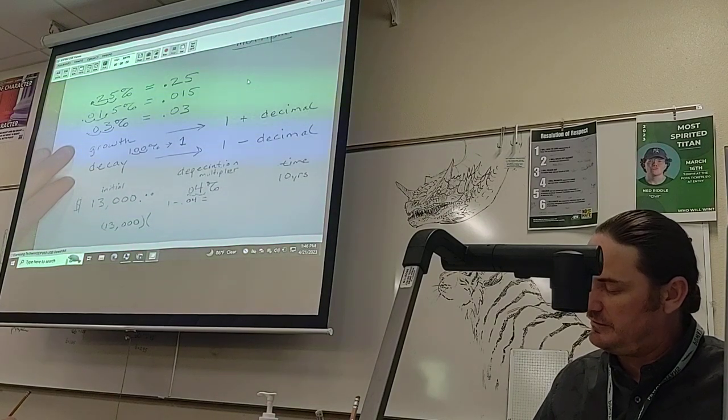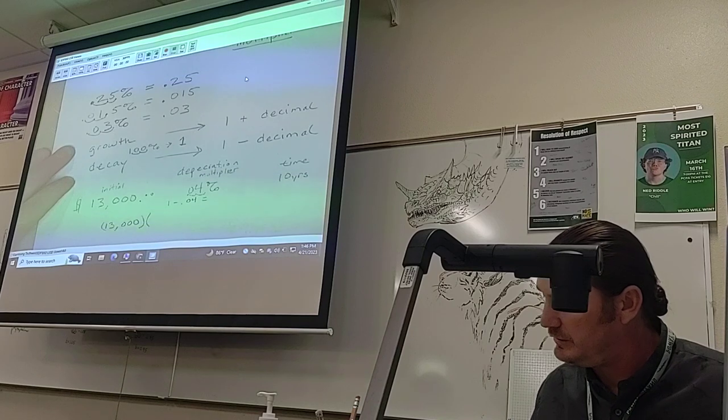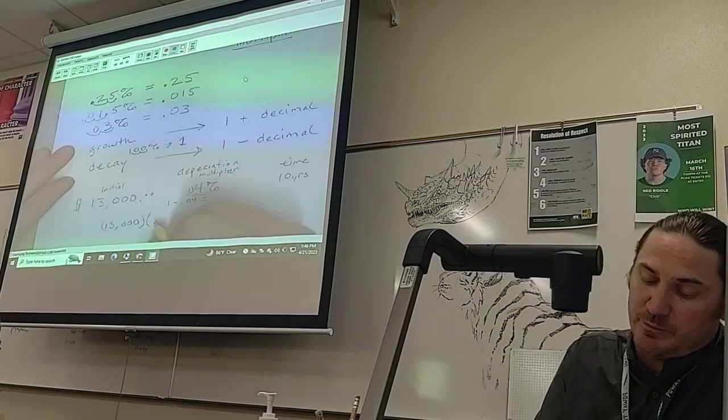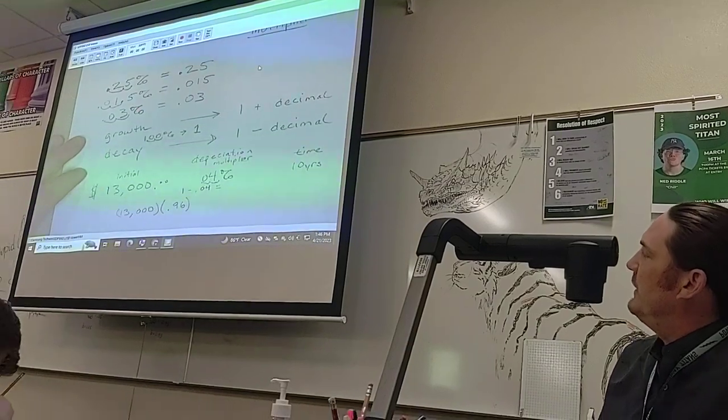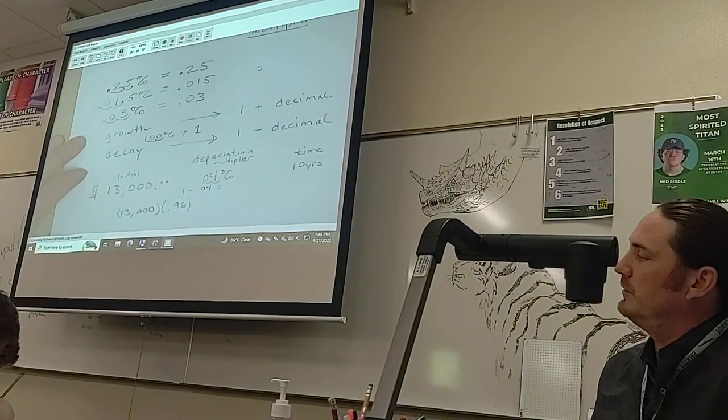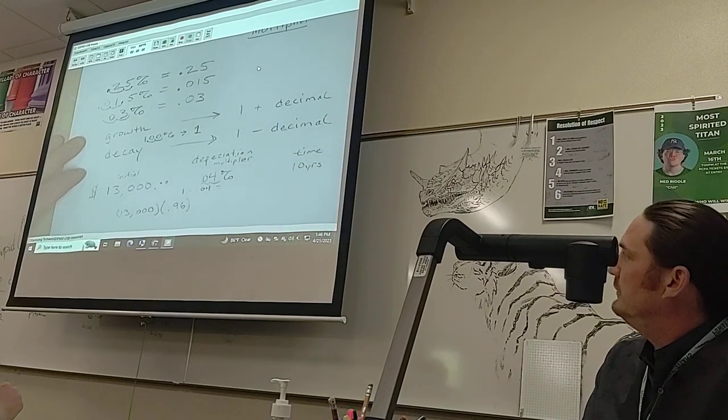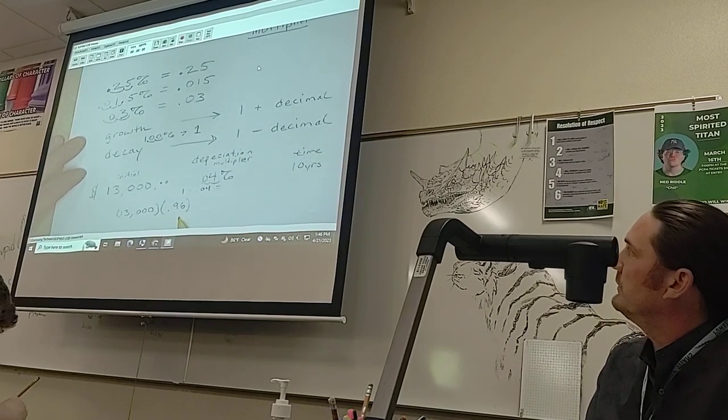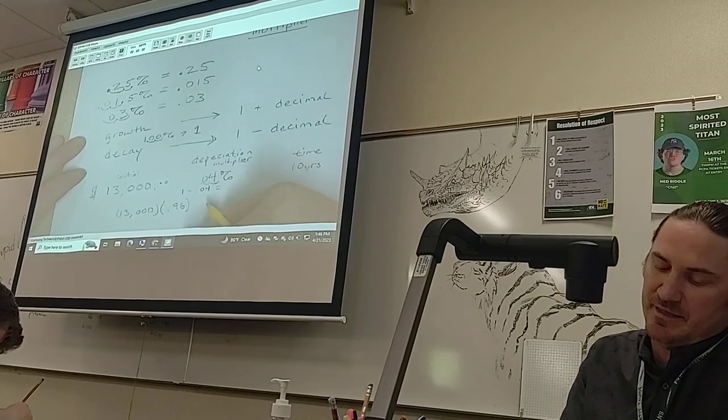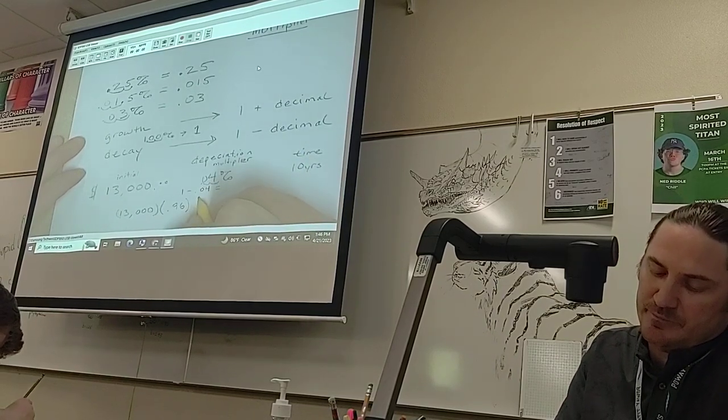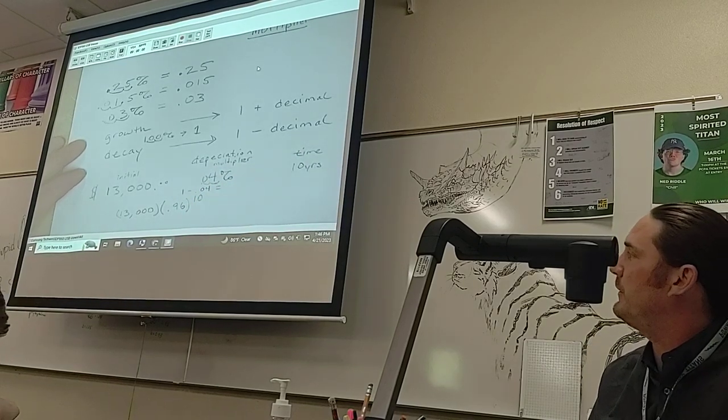We'll pull out our calculators: one minus 0.04 leaves us with 0.96. So that's our multiplier or our decay rate. Since it's less than one, we know that the numbers will be getting smaller—it'll be depreciation or decay. And then we have time, which is our value to the 10th power.